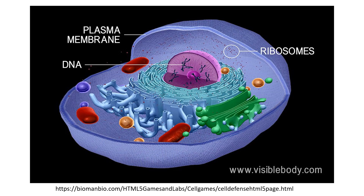Do you remember the three major parts of a cell? The DNA, the plasma membrane, and the cytoplasm. The cytoplasm is the medium where all the organelles are located. Regardless if the cell is prokaryotic or eukaryotic, it always has its DNA where genetic material is stored, a cytoplasm where metabolic processes essential to survival occur, and a cell membrane or plasma membrane that serves as a protective barrier of the cell from its environment.